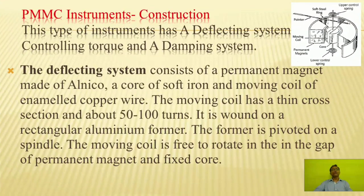We will now see the construction of a PMMC type instrument. This type of instrument has a deflecting system, controlling torque, and damping system. The deflecting system consists of a permanent magnet made of alnico, a core of soft iron, and a moving coil of enameled copper wire. The moving coil has a thin cross-section and about 5200 turns. It is wound on a rectangular aluminum former, which is pivoted on a spindle. The moving coil is free to rotate in the gap between the permanent magnet and the fixed core.